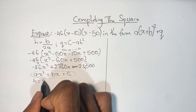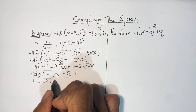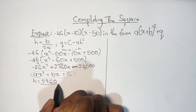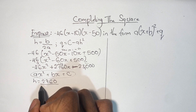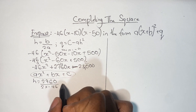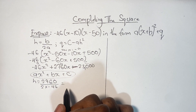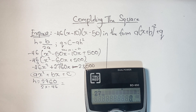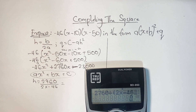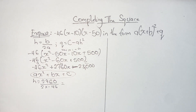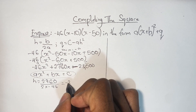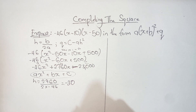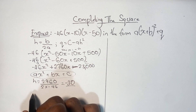Having that, we can now plug in the values for H and Q. H equals B over 2A. B is 2760, divided by the product of 2 times our A value, which is negative 46. So we have 2760 divided by negative 92. When we work that out, we actually get negative 30. So our H value equals negative 30, and we're going to make note of that because it's going to be very important.